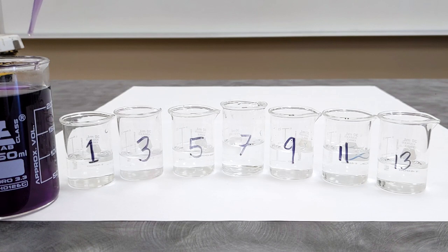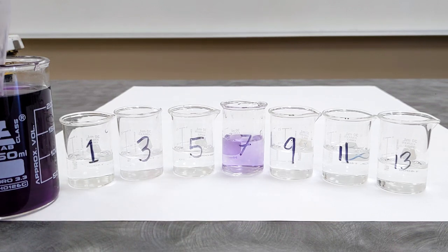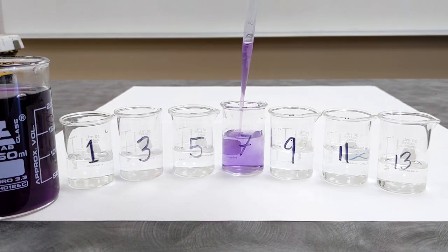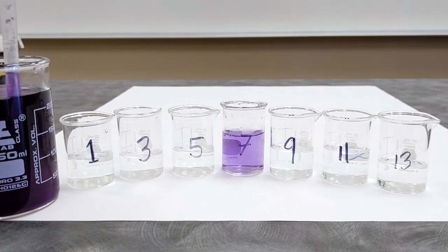I've prepared a series of buffers at the pHs listed here, 1, 3, 5, 7, 9, 11, 13. I've actually made them all, but we're going to start with the odd numbers. You notice that as I pipet the cabbage juice into the pH 7 buffer, the color is similar to the original cabbage. That's a sign that the original cabbage was close to neutral.